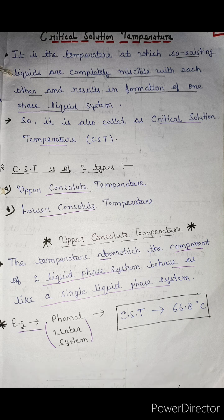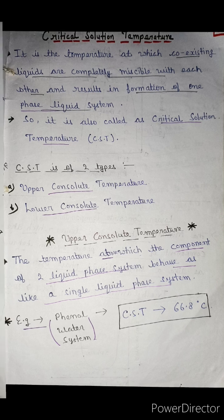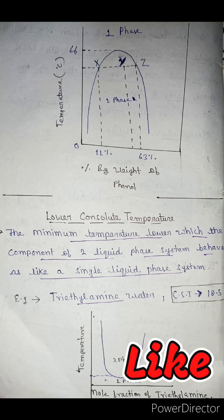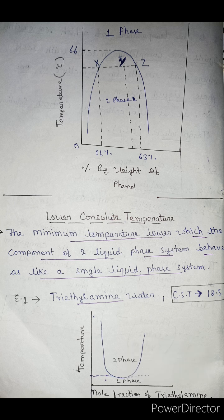It is of two types: upper consolute temperature and lower consolute temperature. Upper consolute temperature — for the phenol-water system, the CST is 66.8 degrees Celsius. Lower consolute temperature is the minimum temperature below which the components of a two-liquid-phase system behave as a single liquid phase. For example, the triethylamine-water system has a CST of 18.5 degrees Celsius.